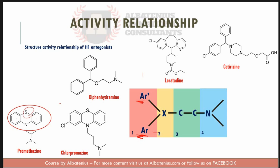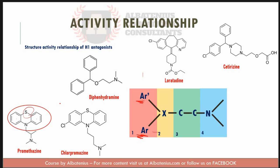The second group is the nature of X. X is never a halogen. Usually X can be oxygen, carbon, or nitrogen.